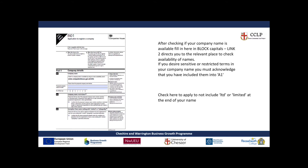A2 applies if you want to include a sensitive or restricted term in your name. If this is the case, just tick the box and the application will go through and a decision will be made as to whether or not this is permitted. A3 — not usual — but if you want to apply to not have the 'Limited' or 'Ltd' statement at the end of your name, you'd select here to apply. This is only usually accepted in very specific circumstances, like if you're a charity.